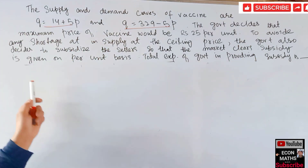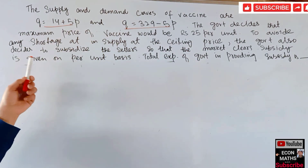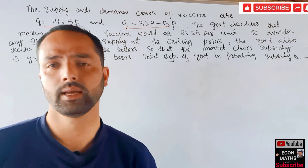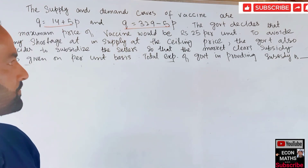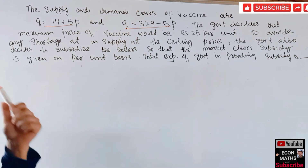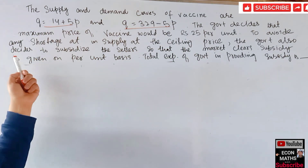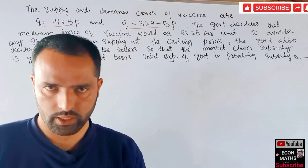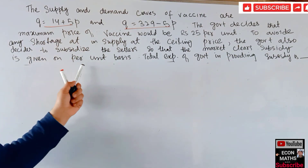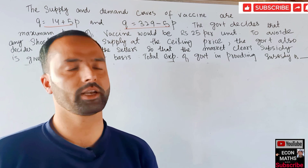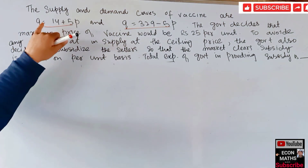To avoid any shortage in supply at the ceiling price, the government also decides to subsidize the sellers so that the market clears. So the government is imposing a price ceiling of ₹25 and also subsidizing sellers. The subsidy is given on a per-unit basis, and we have to find the total government expenditure in providing the subsidy.